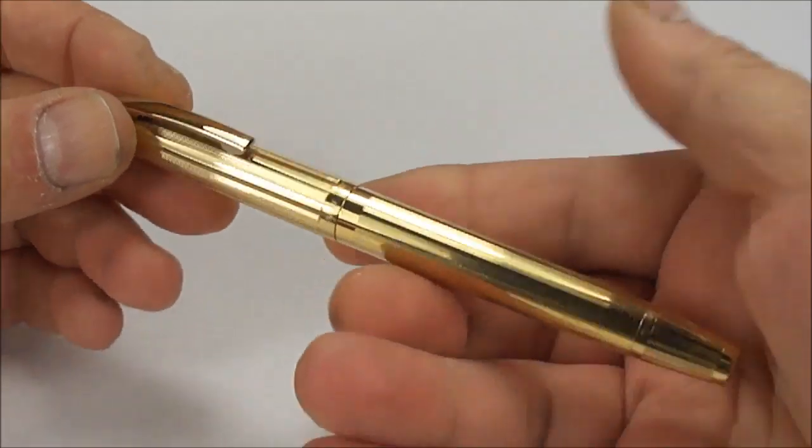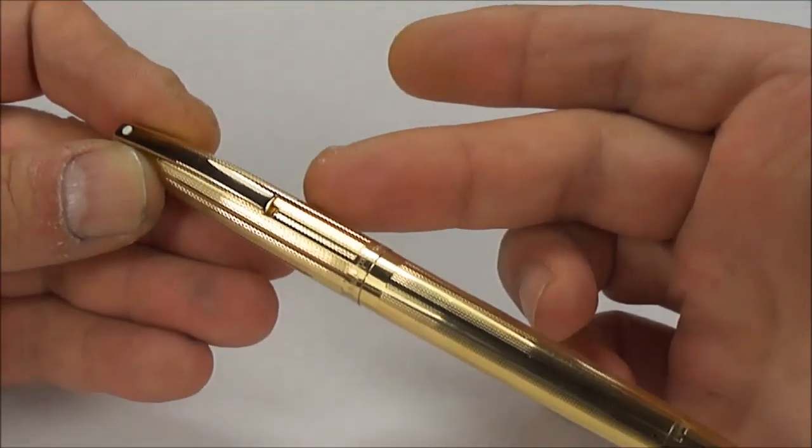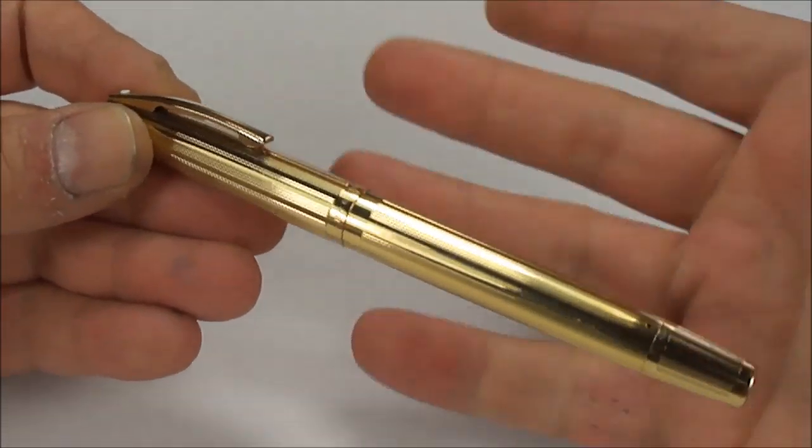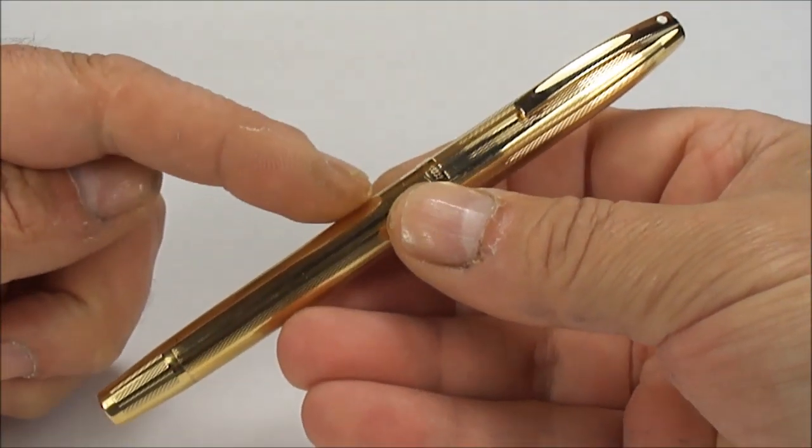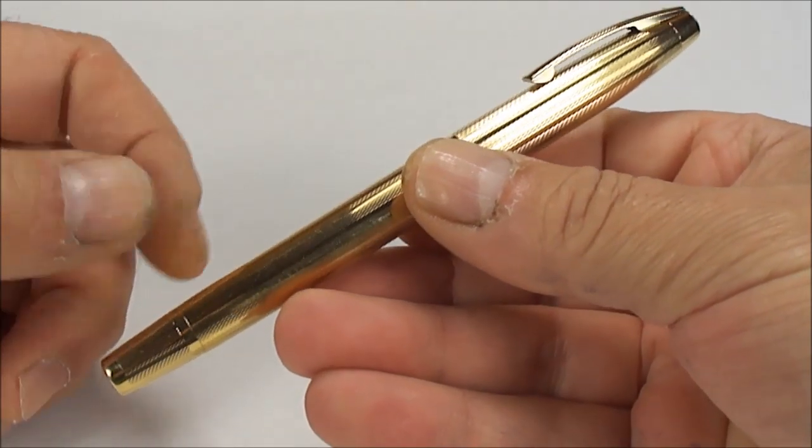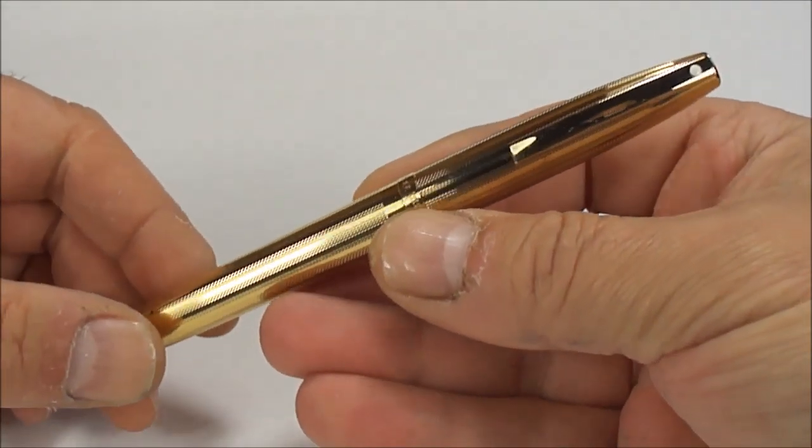Now the Schaefer Imperial pens were brought out in different configurations. They had plastic barrels with metal caps, plastic caps, etc. This model here is actually the Schaefer Imperial Triumph, and as we'll show in a moment, it's actually the touchdown filler.